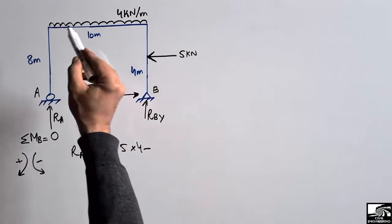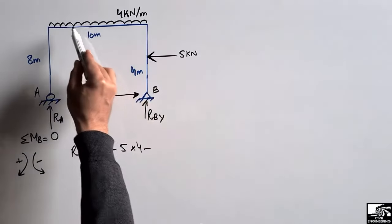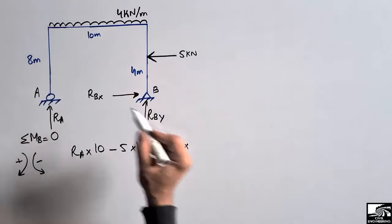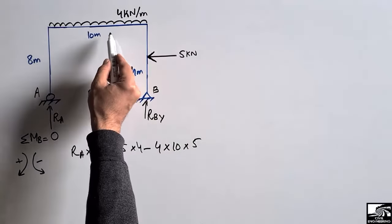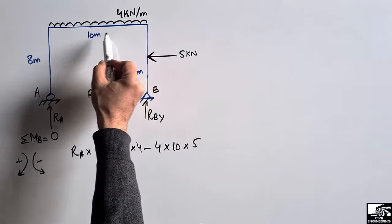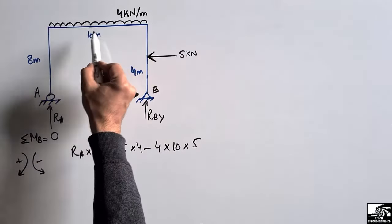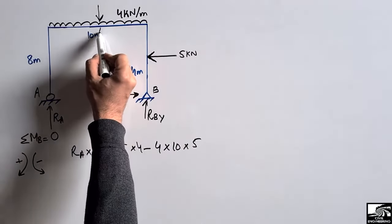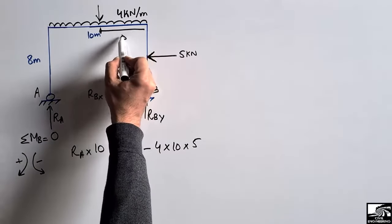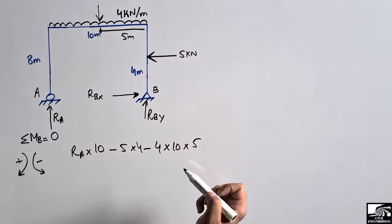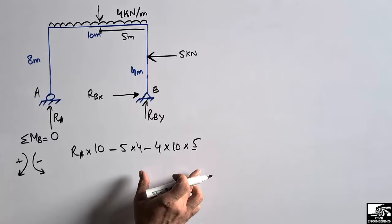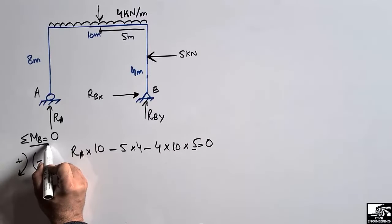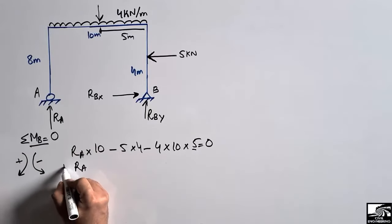The uniformly distributed load also creates a moment about point B. We convert it to a concentrated load: 4 kN/m × 10 m = 40 kN, acting at the center of the beam, giving a moment arm of 5 meters from point B. So the equation becomes: RA × 10 − 5 × 4 − 4 × 10 × 5 = 0, and the summation of all moments about B equals zero.